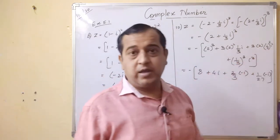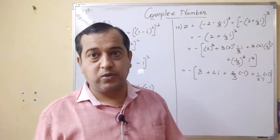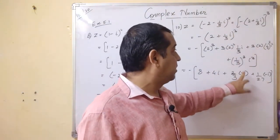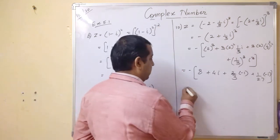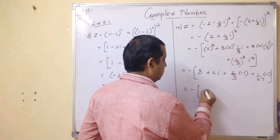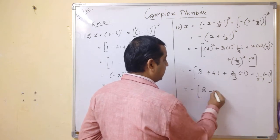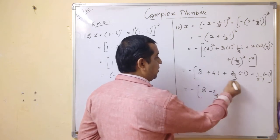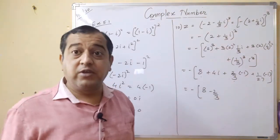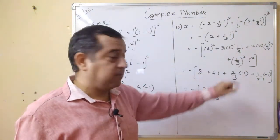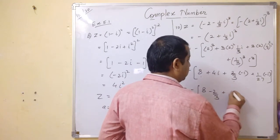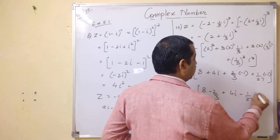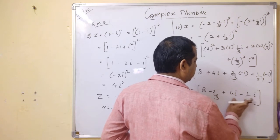Here 1 by 9, 6 by 9 gives you 2 by 3. You have i square, i square becomes minus 1. So this part becomes negative. And 1 by 3 cube means 1 by 27, i cube is minus i. Now minus, this is 8 and this is minus 2 by 3. This part and this part are free from i. So 8 and minus 2 by 3. This part and this part have i present. Plus 4i minus 1 by 27 i. You get this.